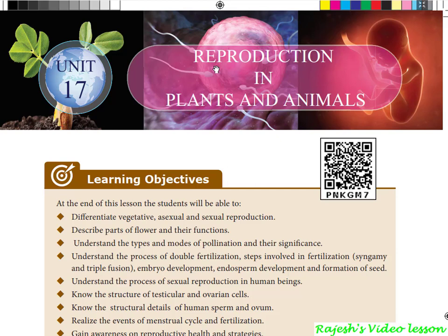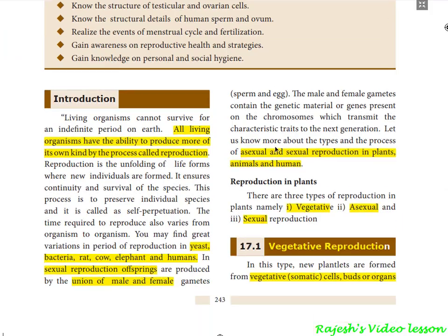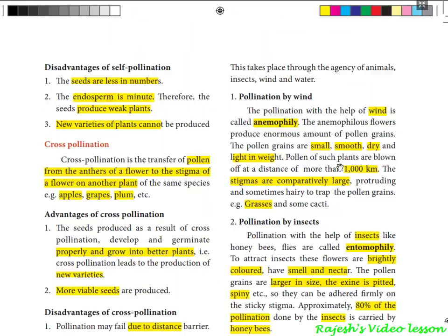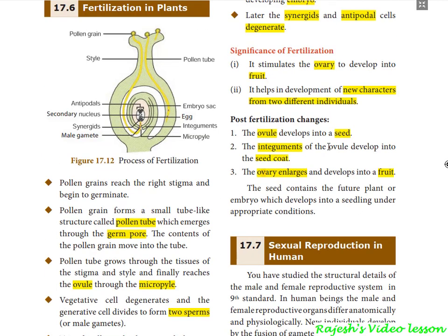Hi students. In this video on 10th science biology unit — reproduction in plants and animals — we are going to see the next important phase of reproduction in plants: pollination and its types, the agents facilitating pollination, fertilization, the stages in fertilization, and post-fertilization changes. Everything will be explained in this video, so go through it thoroughly and share with your friends.